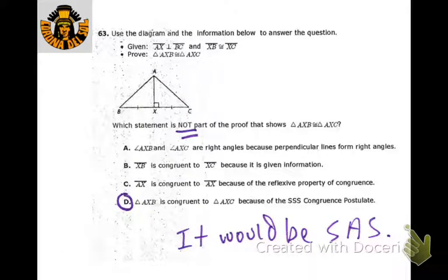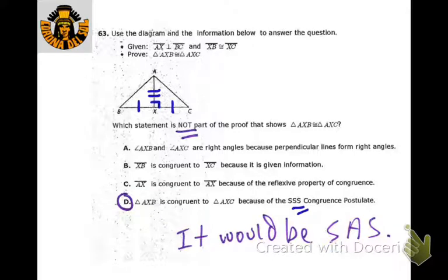For this one, which statement would NOT be part of the proof? We have a perpendicular mark and XB congruent to XC. We'd say the shared side is congruent by the reflexive property — so we'd use side-angle-side to prove congruence. We wouldn't be able to do side-side-side because we don't have information about the third side.